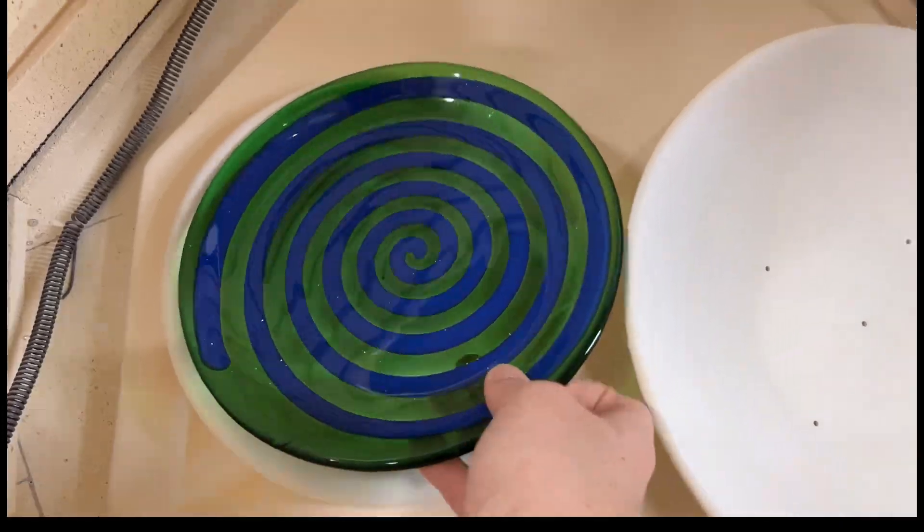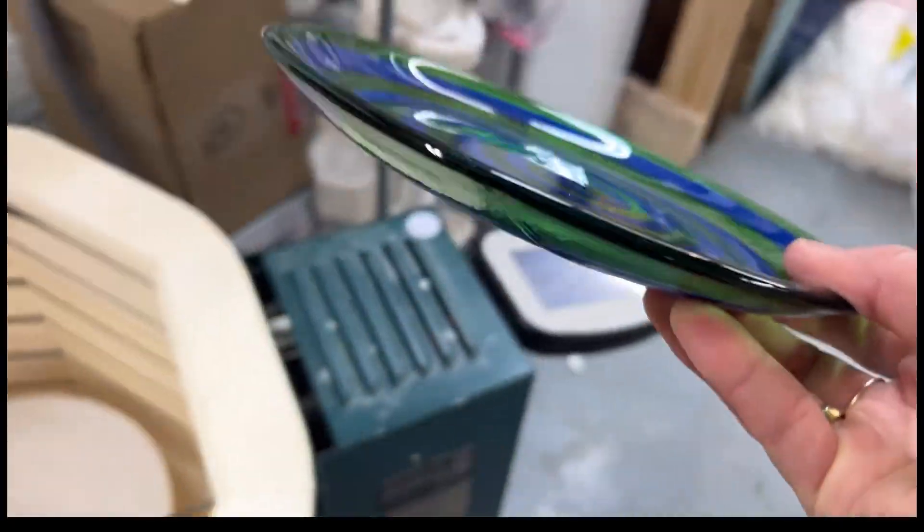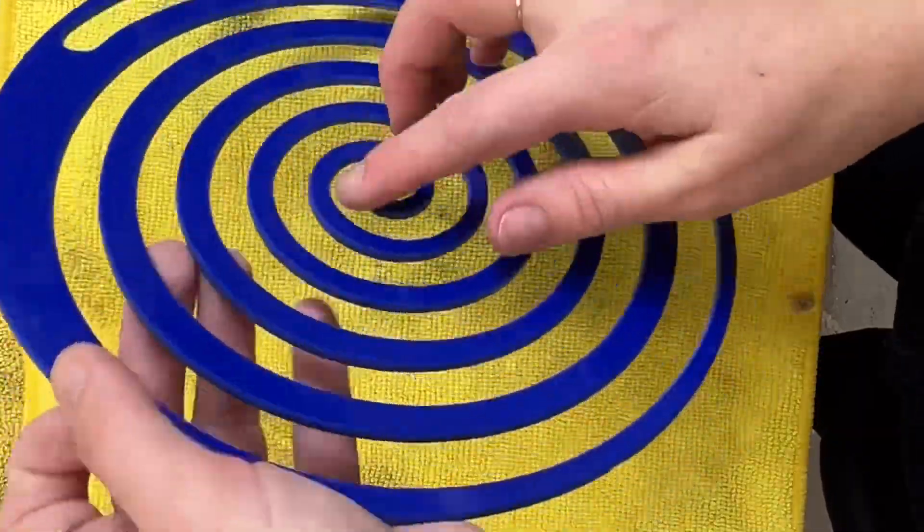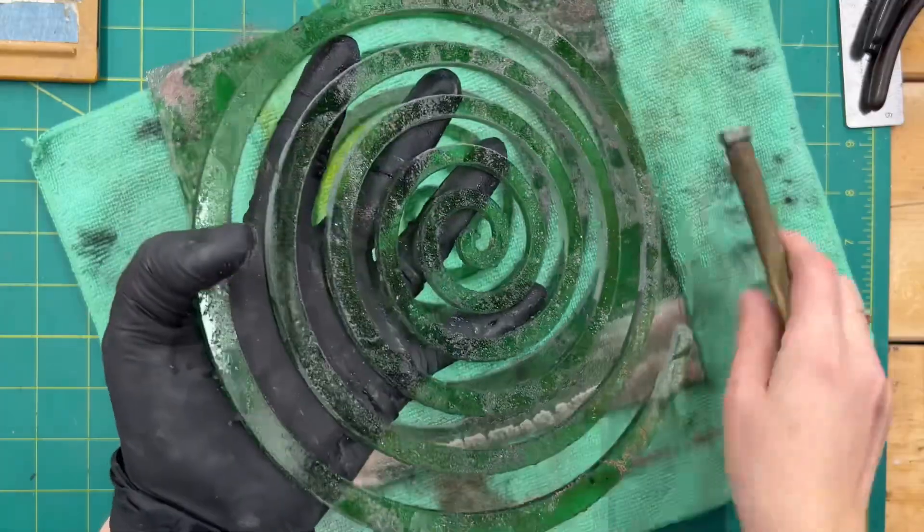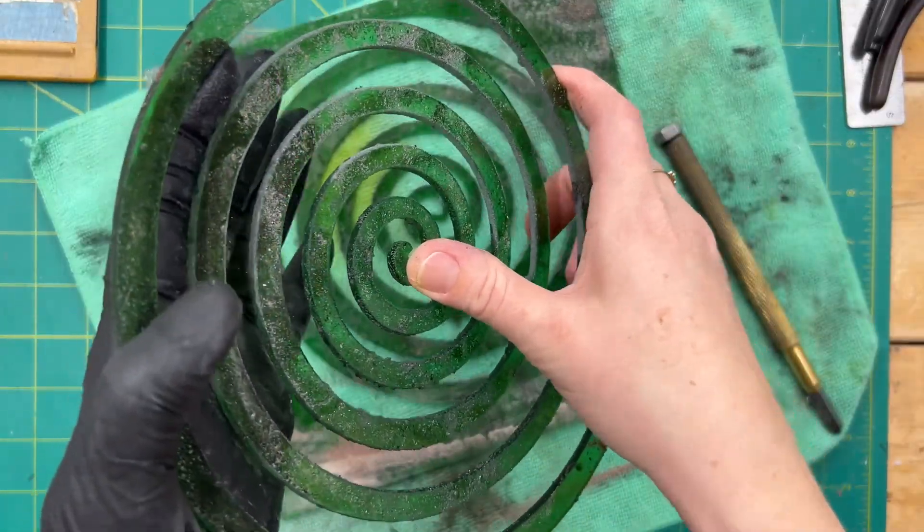Once it's fired again, here's the final result. It's a beautiful slumped glass plate with a precise spiral pattern. I love how the light plays off the design, and it's amazing to think this all started just as an experiment.